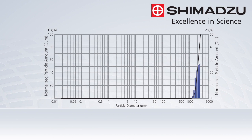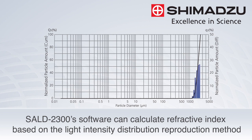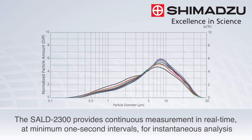Across this measurement range, the SALD2300 software can automatically calculate an appropriate refractive index based on the light intensity distribution reproduction method — the world's first software to perform this calculation. The SALD2300 provides continuous measurement in real time.